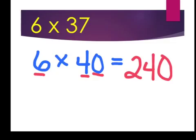Now, that 240 is not the answer to 6 times 37. It's our estimate of 6 times 37. Now, we rounded 37 up to 40.